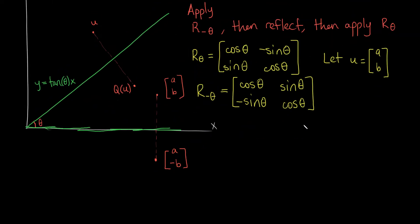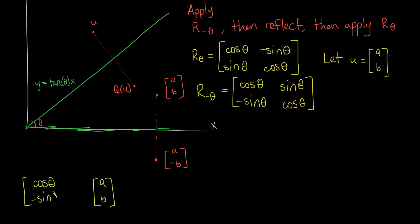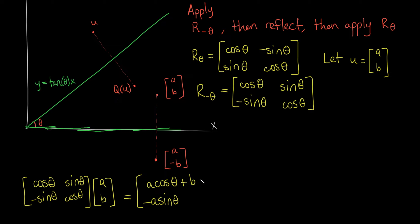Let's write this out. First, we multiply u by R(−θ) so we're getting the rotated point which will then be reflecting across the x-axis. So u is [a, b] multiplied by R(−θ): cosine theta, negative sine theta, sine theta, cosine theta. When we multiply, we get: a·cos(θ) + b·sin(θ) for the x-component, and −a·sin(θ) + b·cos(θ) for the y-component.